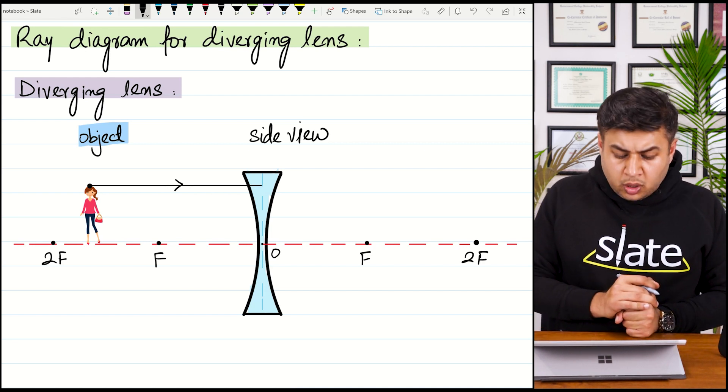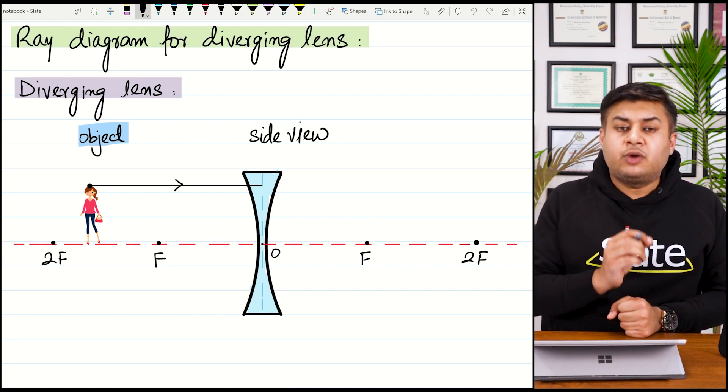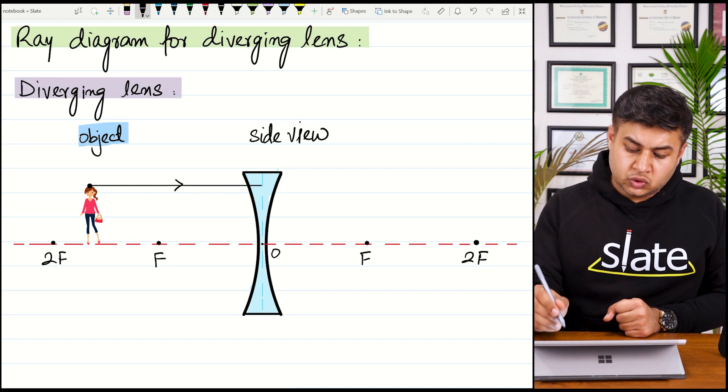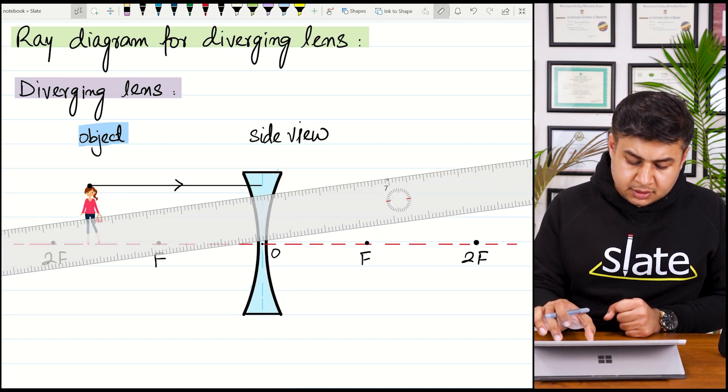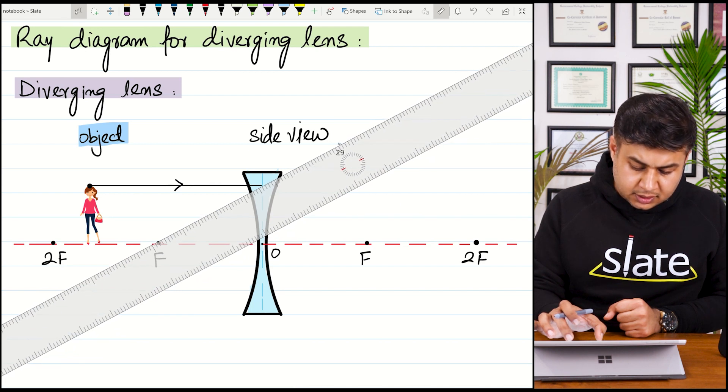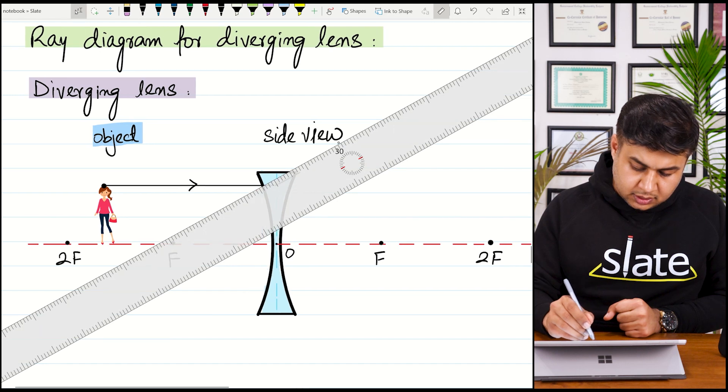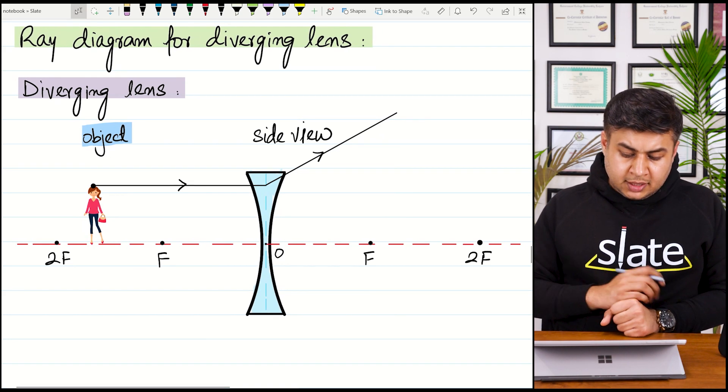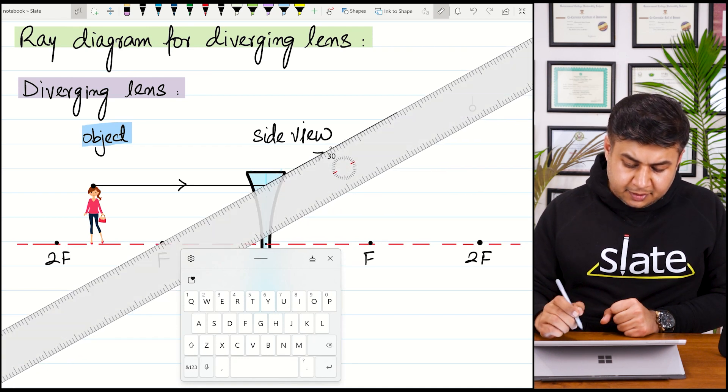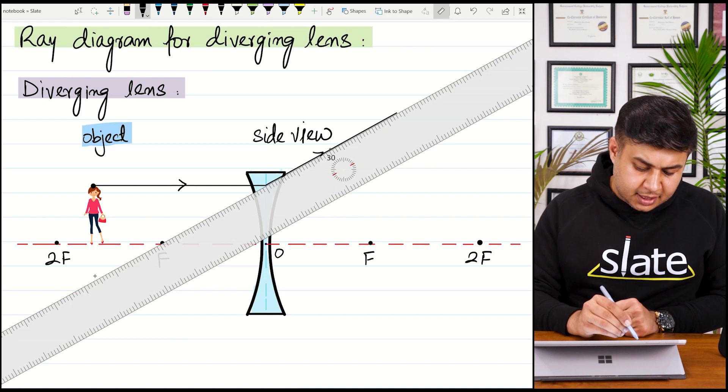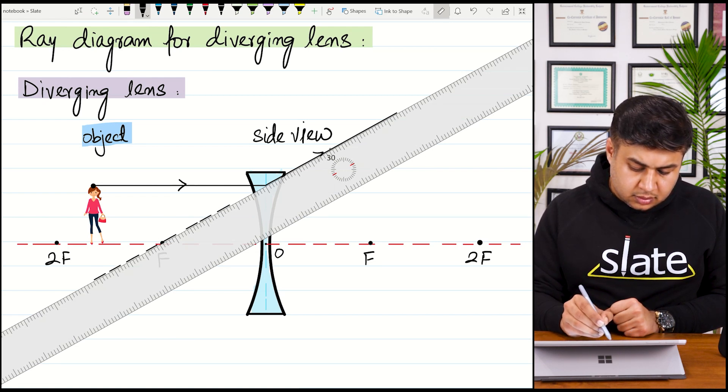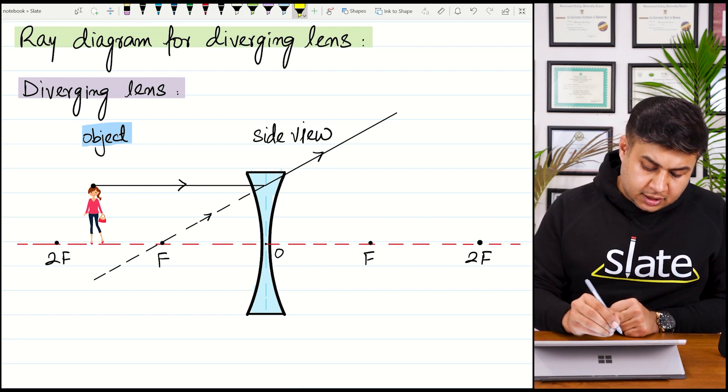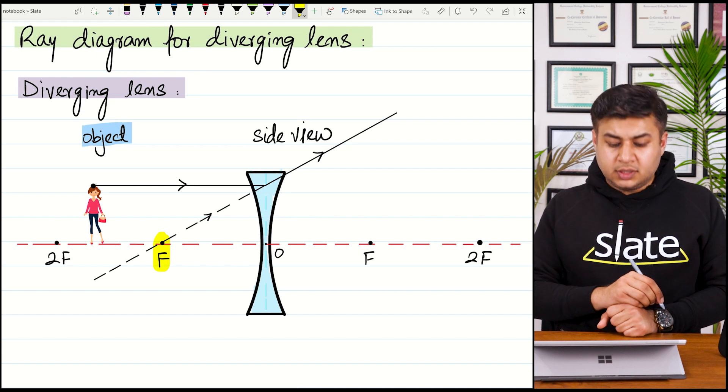So here is a ray of light which is diverging after passing through the lens. This is a diverging ray, going away and spreading out.